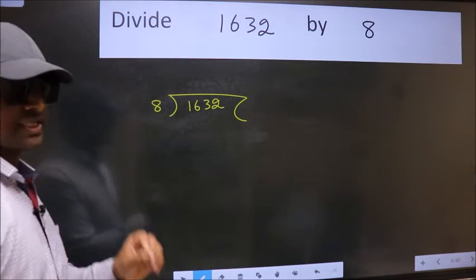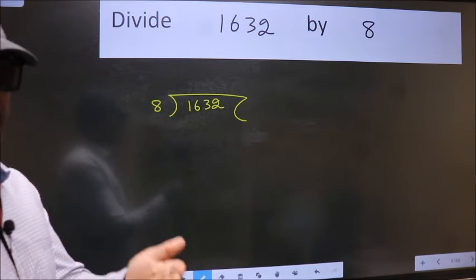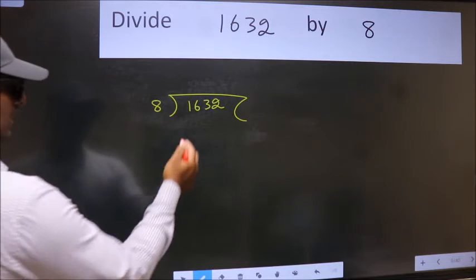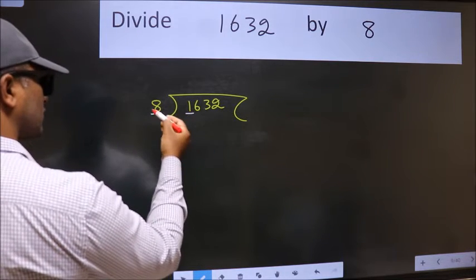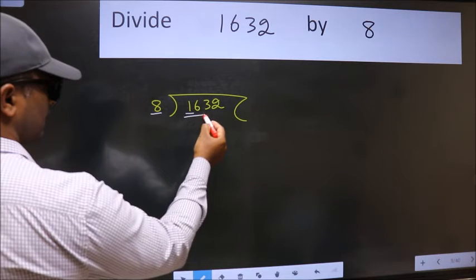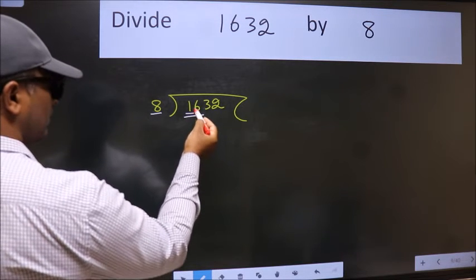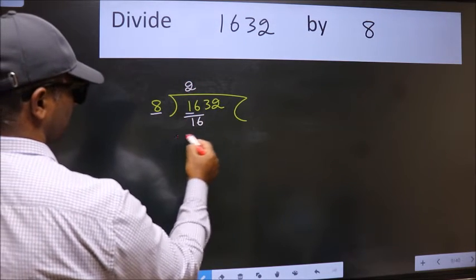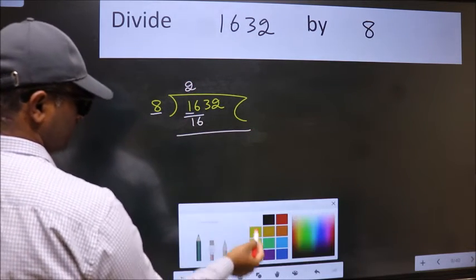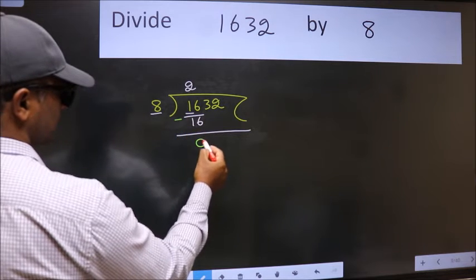This is your step 1. Next, here we have 1 and here 8. 1 is smaller than 8, so take 2 numbers: 16. When do we get 16 in the 8 table? 8 times 2 is 16. Now we should subtract. We get 0.